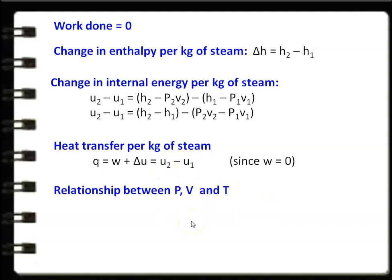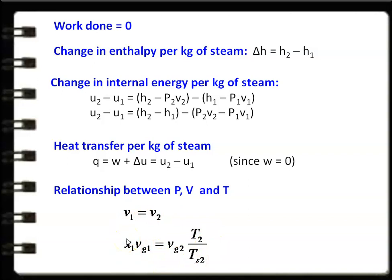The relationship between pressure, volume, and temperature: V1 = V2 (volume is constant). For wet steam, the specific volume is X1·VG1; for superheated steam it is VG2 · (T2/TS2). From this equation you can find the unknown. All equations — ΔH = H2 − H1, ΔU = U2 − U1, Q = W + ΔU — are very similar to the perfect gas equations. The difference is that you must calculate the steam properties (H1, H2, U1, U2) differently depending on the condition of the steam.